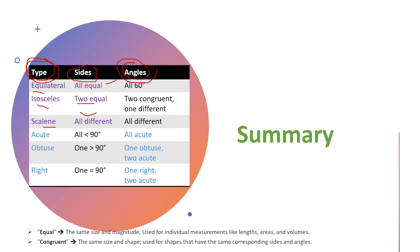Let's summarize. We classified triangles into different types. Based on sides, we have equilateral (all sides equal), isosceles (two sides equal), and scalene (all three sides different). Based on angles, we have acute angle triangle (all angles acute), obtuse angle triangle (one angle obtuse, remaining acute), and right angle triangle (one angle is 90 degrees, remaining must be acute).